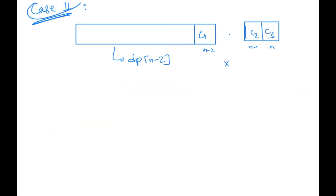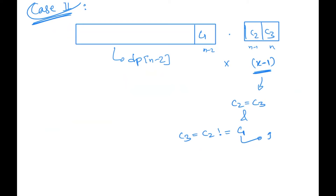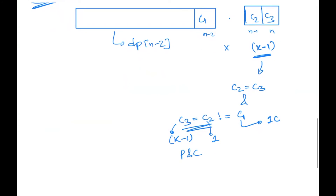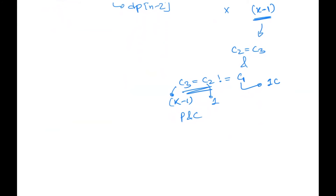For case 2 — c2 equals c3 and c2 not equal to c1 — we have k-1 choices. c1 occupies one color, so whatever color c1 is, we cannot choose that for c2. Out of k colors we have k-1 available choices for c2. Since c2 and c3 have the same color, once we choose c2, c3 must be the same — so it's k-1 into 1, giving k-1 choices overall. This is basic permutation and combinations — just assigning colors to posts.